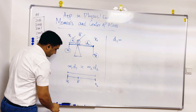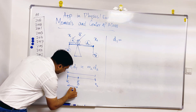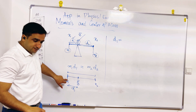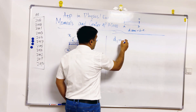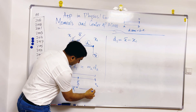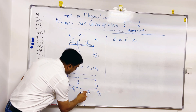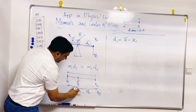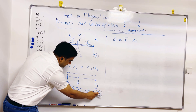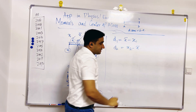I was initially at x1 and moved to x̄, so the distance d1 is my final point minus my initial point: d1 = x̄ − x1. Then from x̄ I move further to x2, so the distance d2 is: d2 = x2 − x̄.